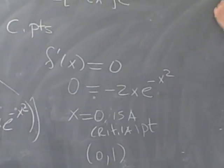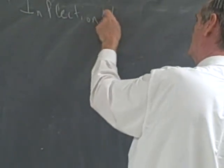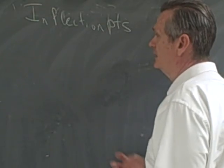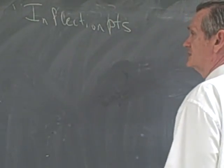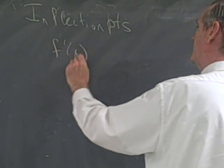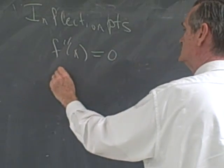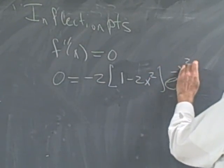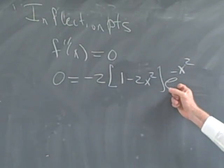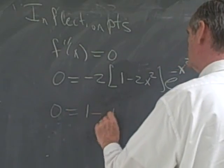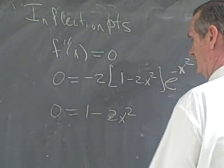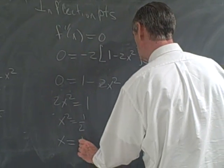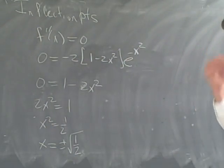For inflection points, some people define them as where the second derivative changes sign; others define them as where the second derivative equals 0. In this case it doesn't matter. Setting f''(x) = 0 gives 0 = minus 2 times (1 minus 2x²) times e^(-x²). Since minus 2 and e^(-x²) are never 0, we need 1 minus 2x² = 0, so 2x² = 1, x² = 1/2, meaning x = ±1/√2, or equivalently ±√2/2.